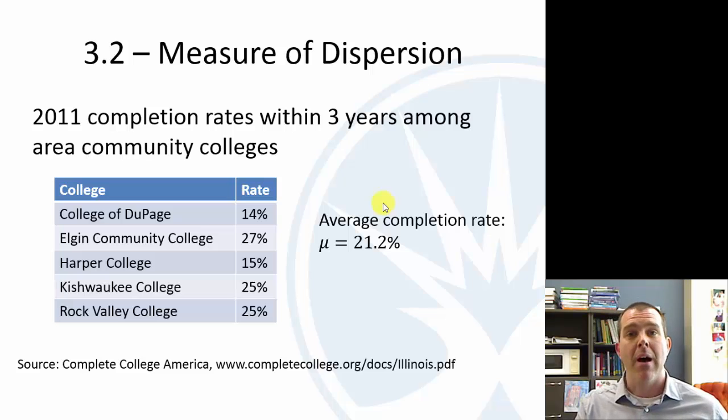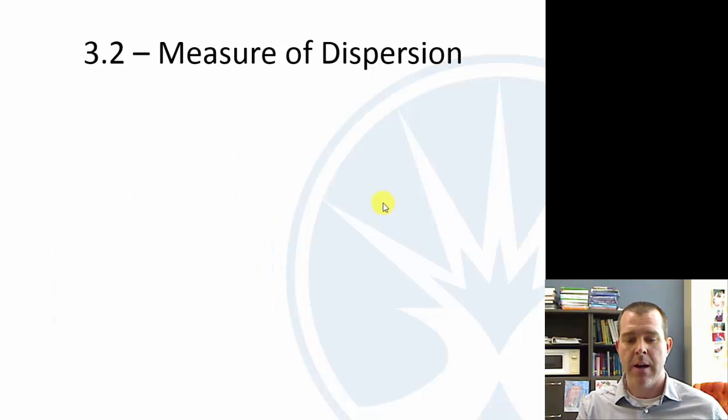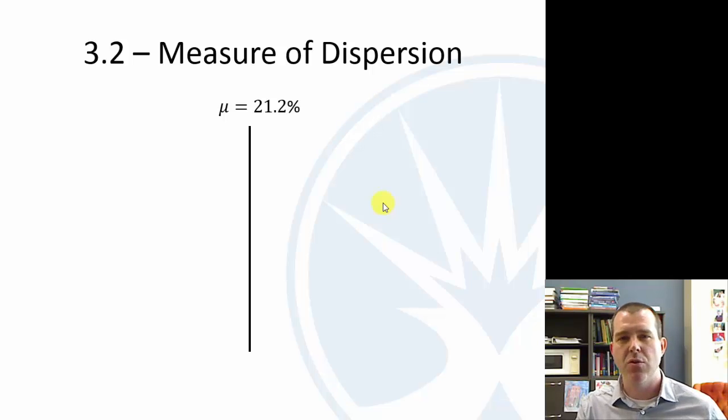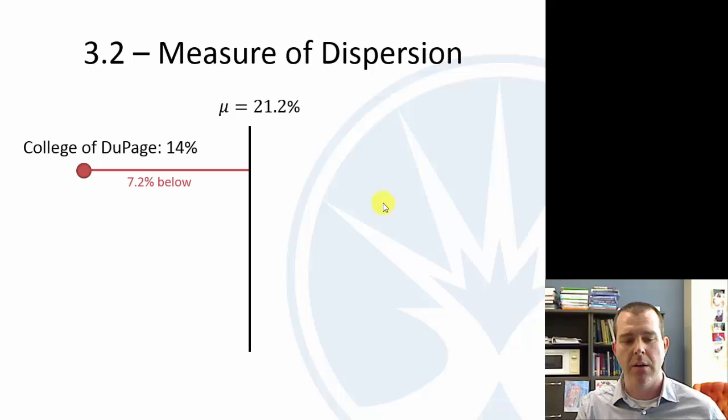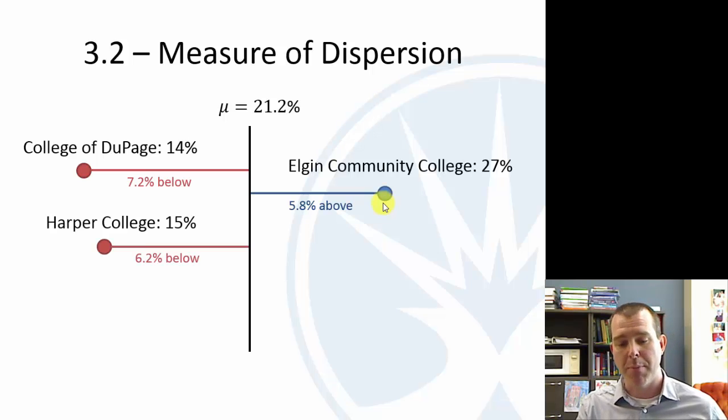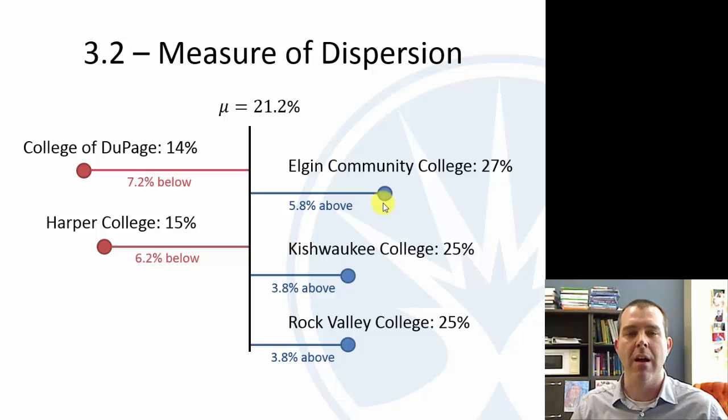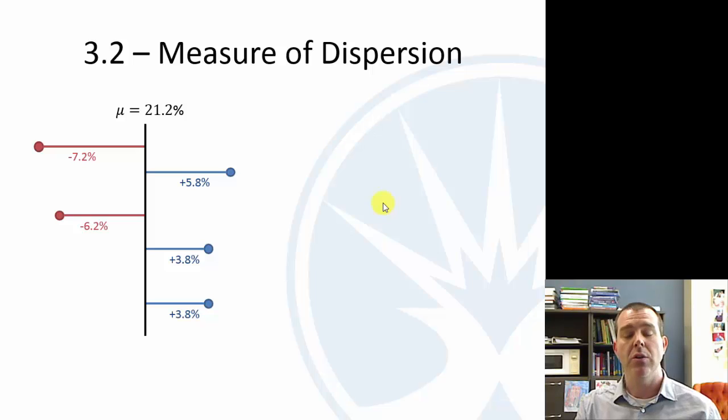The average is about 21, 21.2%. So if you think about that and just try to visualize what's going on, put the 21.2% in the middle. COD is below, ECC is above, Harper, Kishwaukee, Rock Valley. And so we have some below, some above, and we have these differences, 7.2, 5.8. We're going to try to use them somehow to describe a typical, like on average, how far is a typical local community college? How far do they vary from that mean? How spread out are these completion rates?